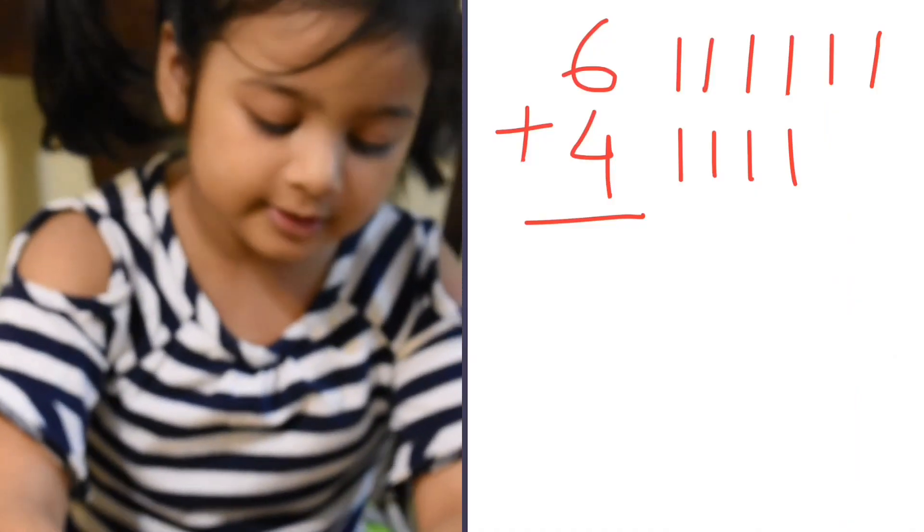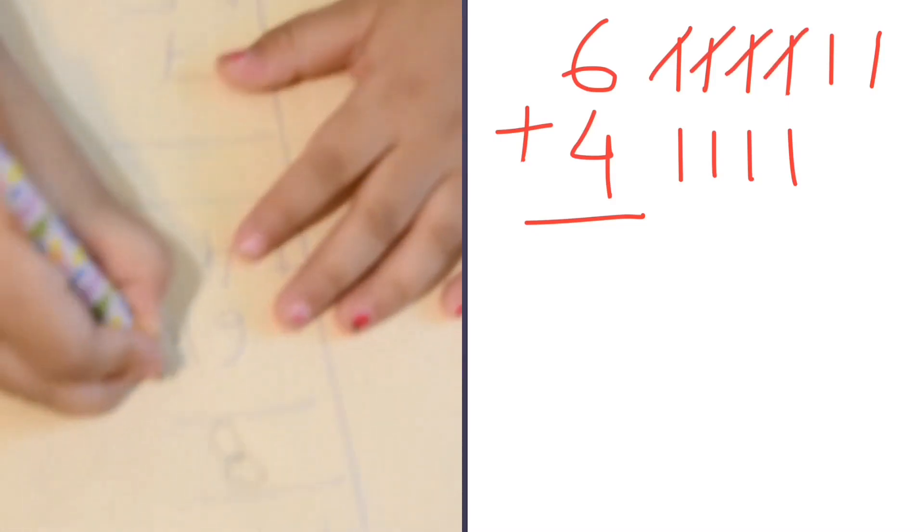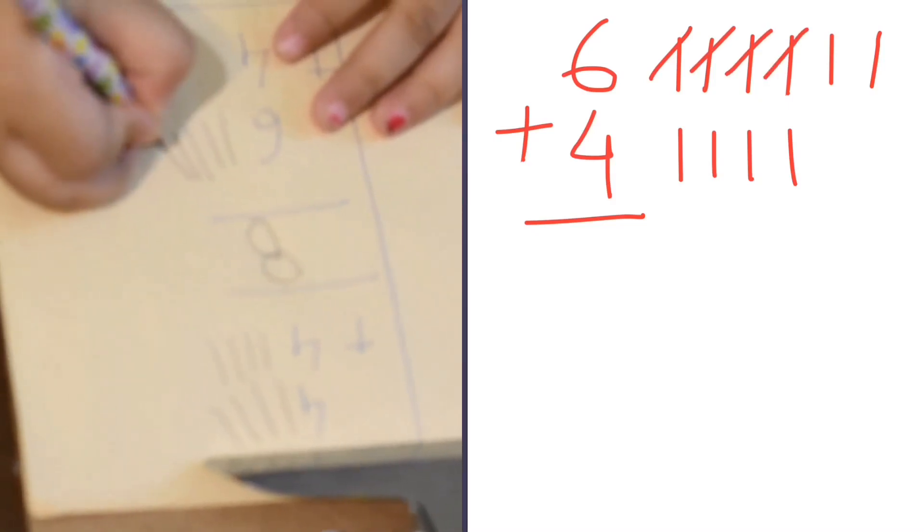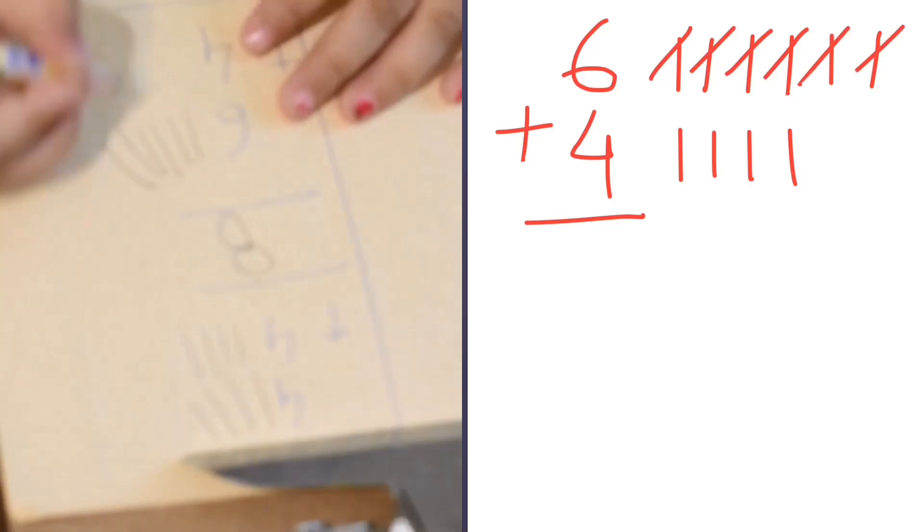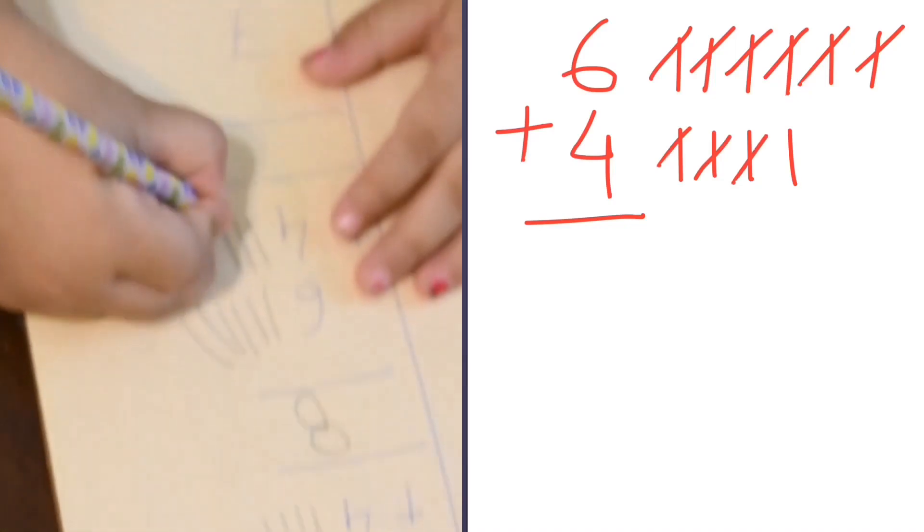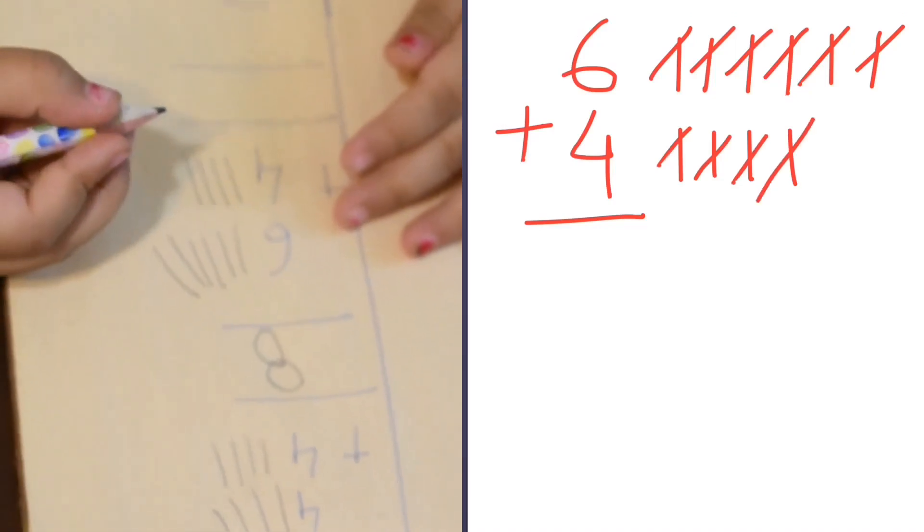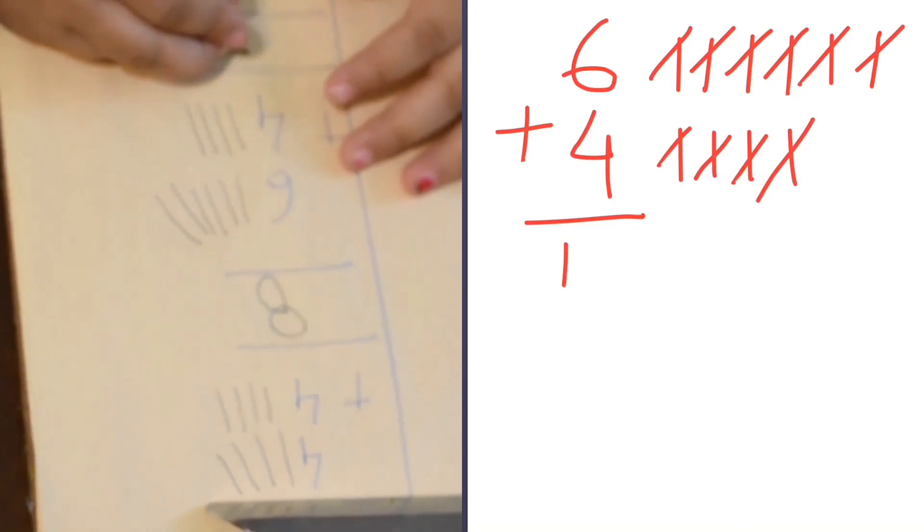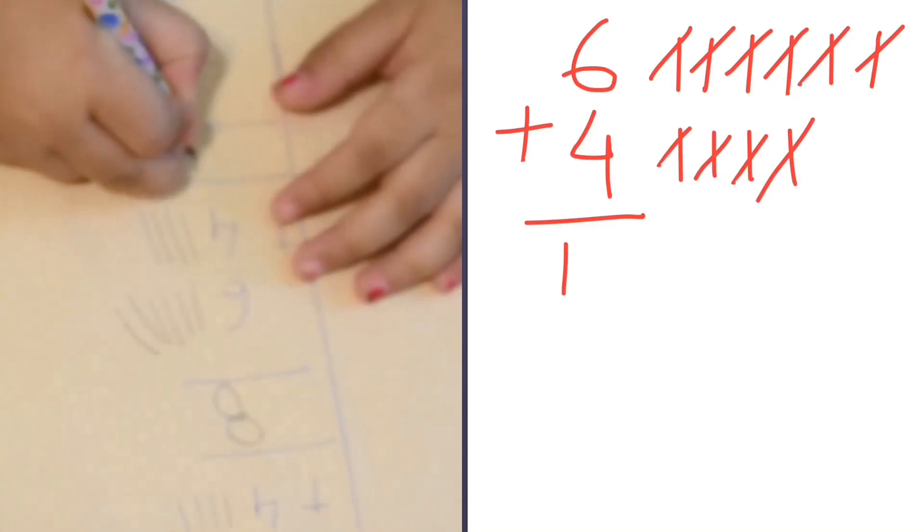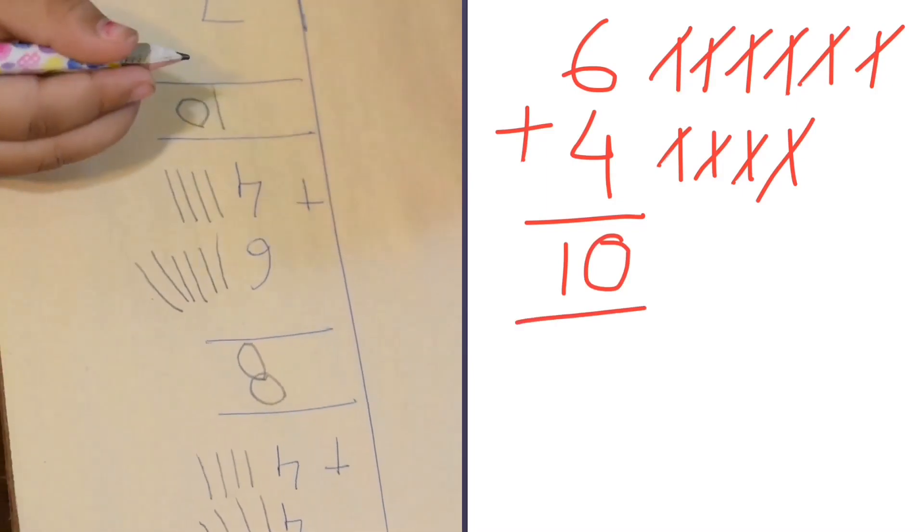6 plus 4 is 1, 2, 3, 4, 5, 6, yes good job, 7, 8, 9, 10. Yes, that's correct! Good job Meme! Now put 1 here in front, yes, and 0 in back, yes, that's correct.